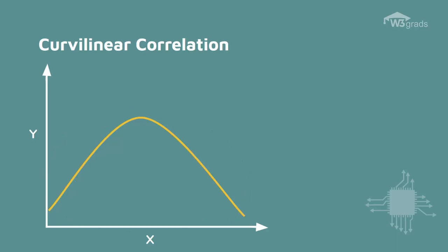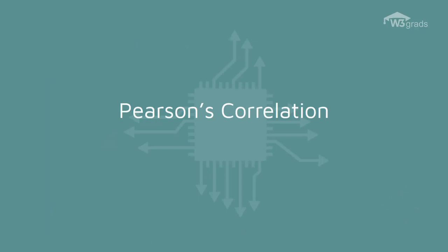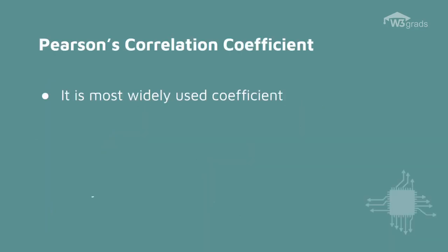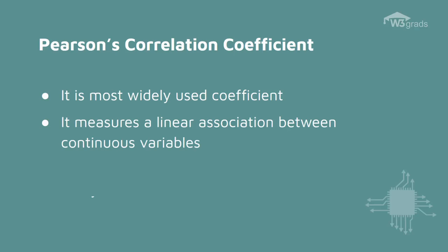The next one is the Pearson correlation. Pearson is the most widely used correlation coefficient. Pearson correlation measures the linear association between continuous variables. In other words, this coefficient quantifies the degree to which a relationship between two variables can be described by a line.